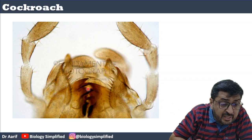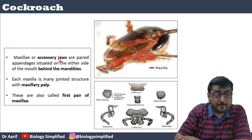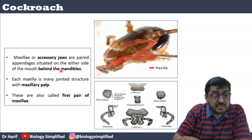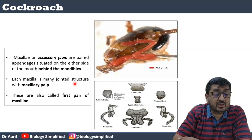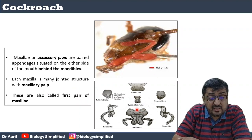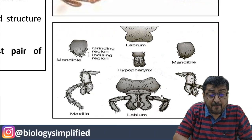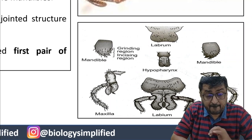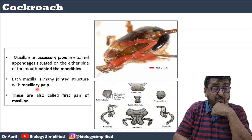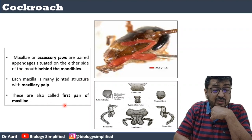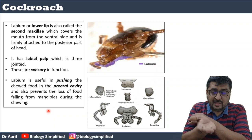The maxilla, or accessory jaws, are situated on either side of the mouth behind the mandibles. Each maxilla is a many-jointed structure with maxillary palps — the multiple-jointed structure visible in the diagram. The maxilla is also called the first pair of maxilla.